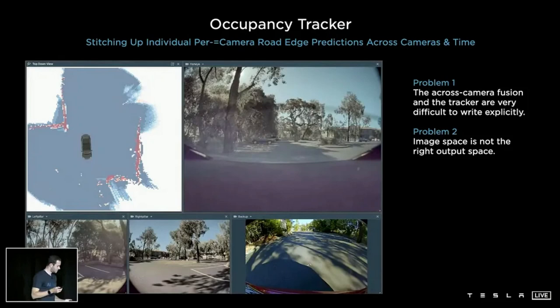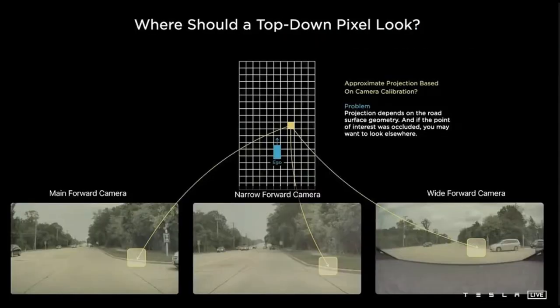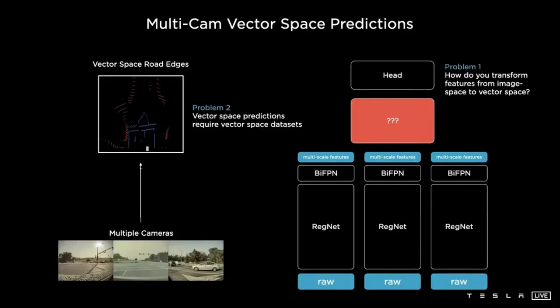I admire the Tesla AI team that can come up with such a simple and elegant solution. Perhaps this is just the result of the first principles thinking advocated by Elon Musk. Tesla's AI team uses the bird's eye view prediction instead of image space predictions. For example, in the picture above, a single yellow pixel in the output space comes from the projection of a road edge detected by the three cameras on the front of Tesla, main forward camera, narrow forward camera, wide forward camera. This projection depends on the road surface geometry, and if the point of interest was occluded, you may want to look elsewhere. It is really hard to actually get correct and have a fixed transformation for this component.